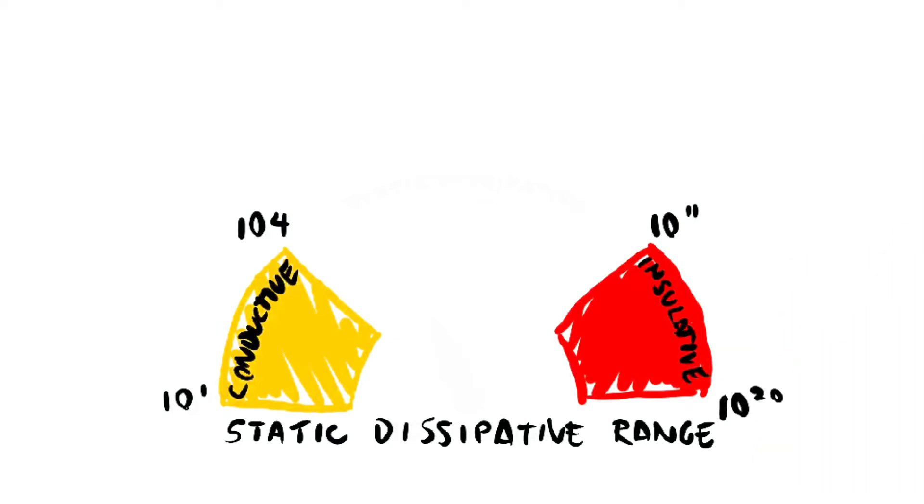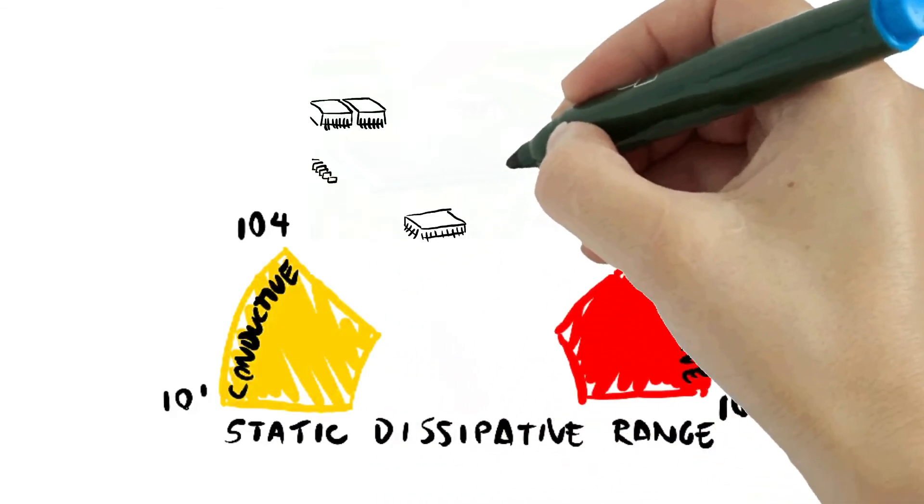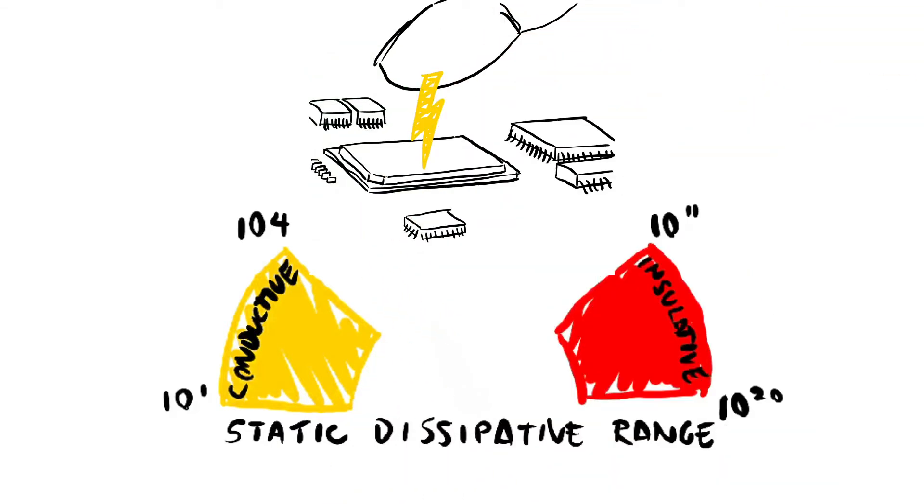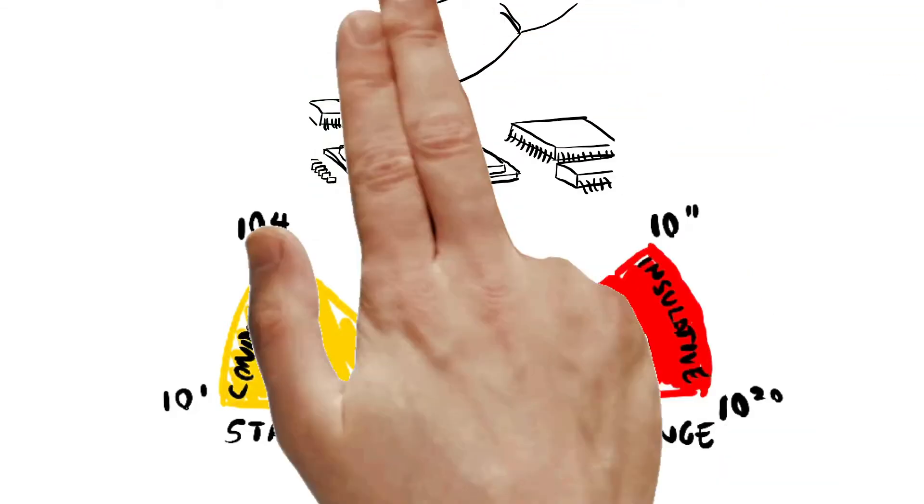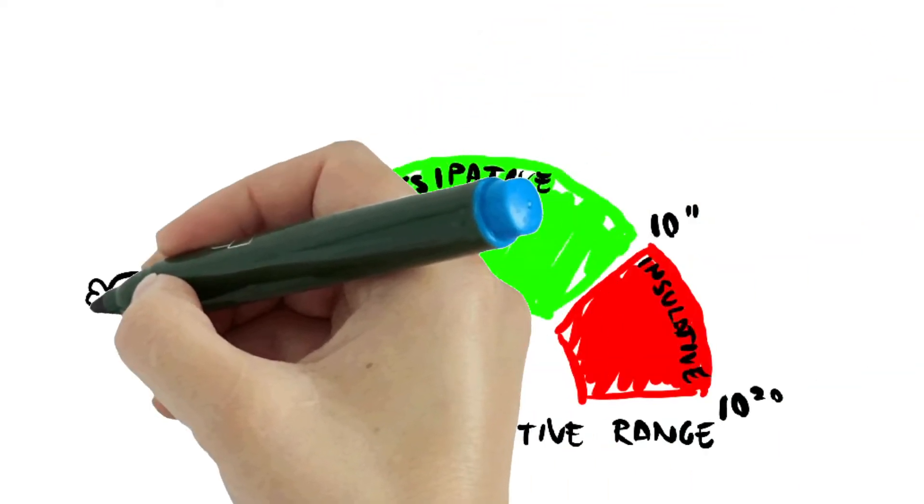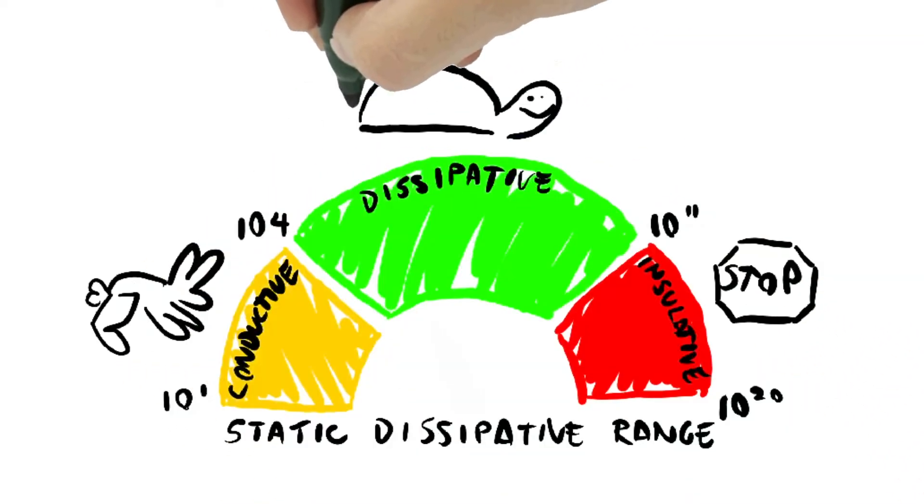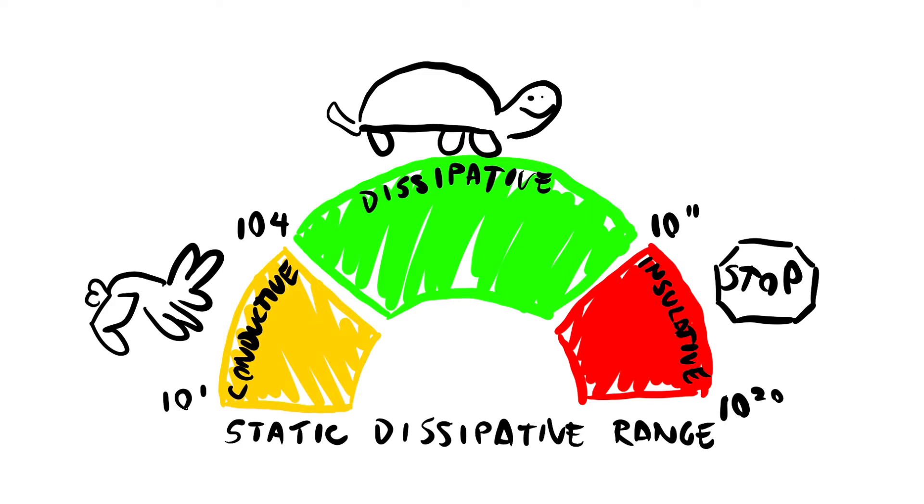Insulative surfaces can have areas where excess atoms with electrons are clumped together, creating hot spots or negatively charged areas. Electrostatically dissipative or ESD-safe materials allow electrons to flow in a controlled fashion.